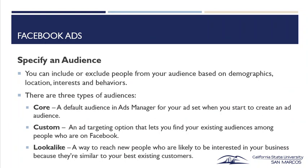Specify an audience. You can include or exclude people from your audience based on demographics, location, interests, and behaviors. There are three main types of audiences: your core audience, which is the default; your custom audience, which is an ad targeting option that lets you find your existing audiences amongst people on Facebook; and a lookalike audience, which is very common — it's a way to reach new people who are likely to be interested in your business because they're similar to your best existing customers. So core, custom, and lookalike.